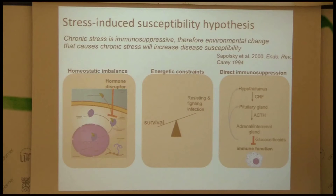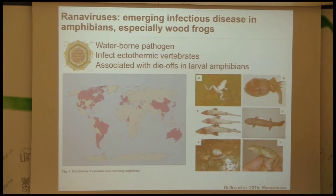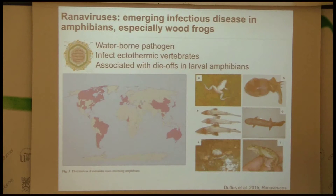Our prediction: if elevated salt concentrations in larvae cause immunosuppression, do we see more severe infections? In collaboration with Jesse Brunner, a disease ecologist who primarily studies ranaviruses, we examined this. These viruses are ubiquitous in freshwater systems and are considered an emerging pathogen. Worldwide, ranaviruses have been associated with infections — the western part of Europe is implicated — and they affect many freshwater animals, not just amphibians.